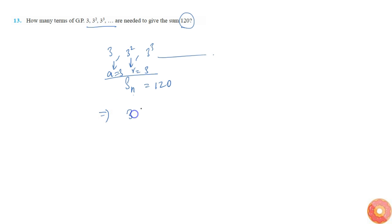The formula is a into r power n minus 1 by r minus 1, this is equal to 120. So that implies 3 into 3 power n minus 1 by 3 minus 1, this is equal to 3 by 2 into 3 power n minus 1, this is equal to 120.